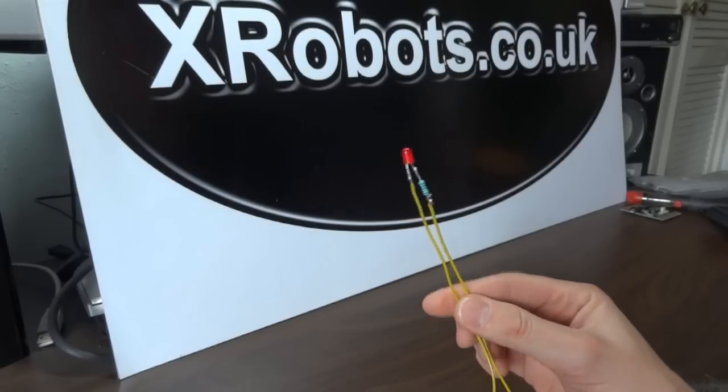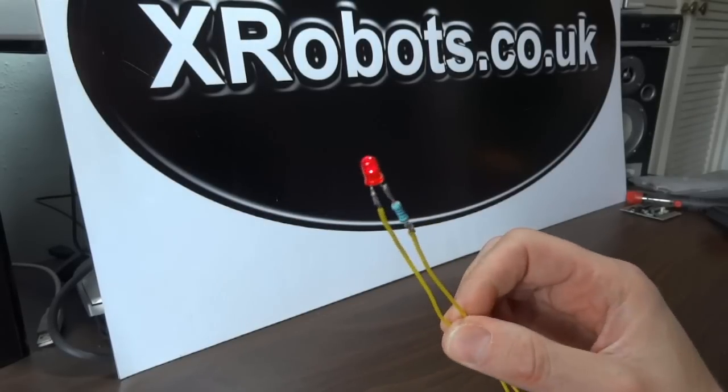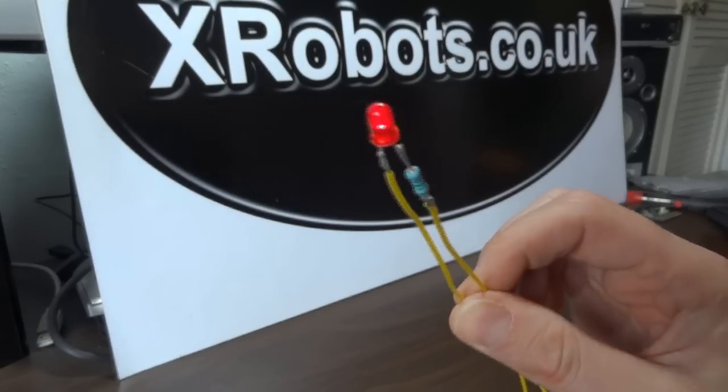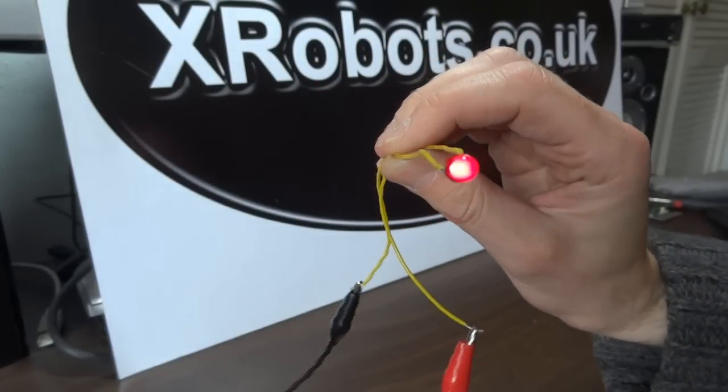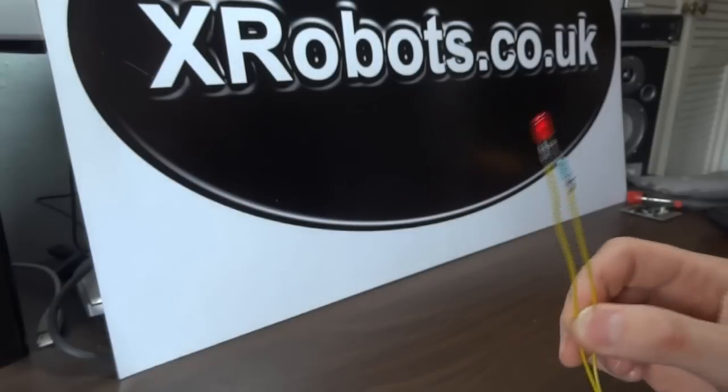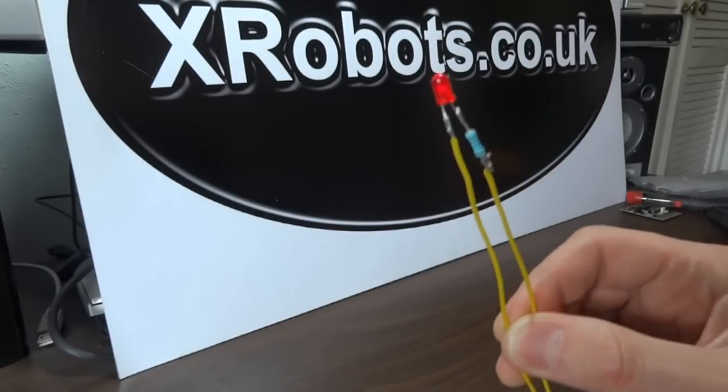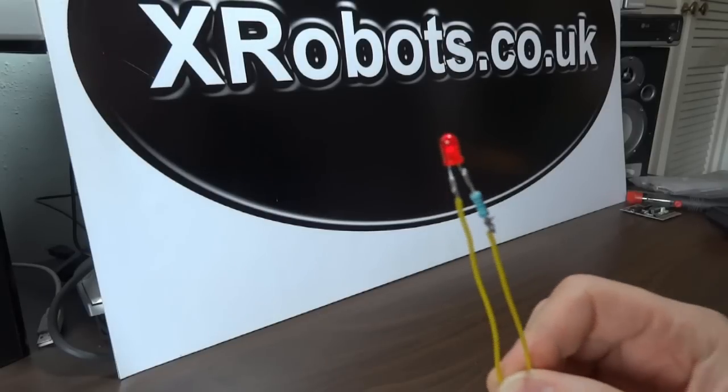Last time I talked about basic soldering, and we made this LED and resistor combination with wires attached, which as you can see works. Today I'm going to tell you about calculating the resistor value and wiring multiple LEDs together.